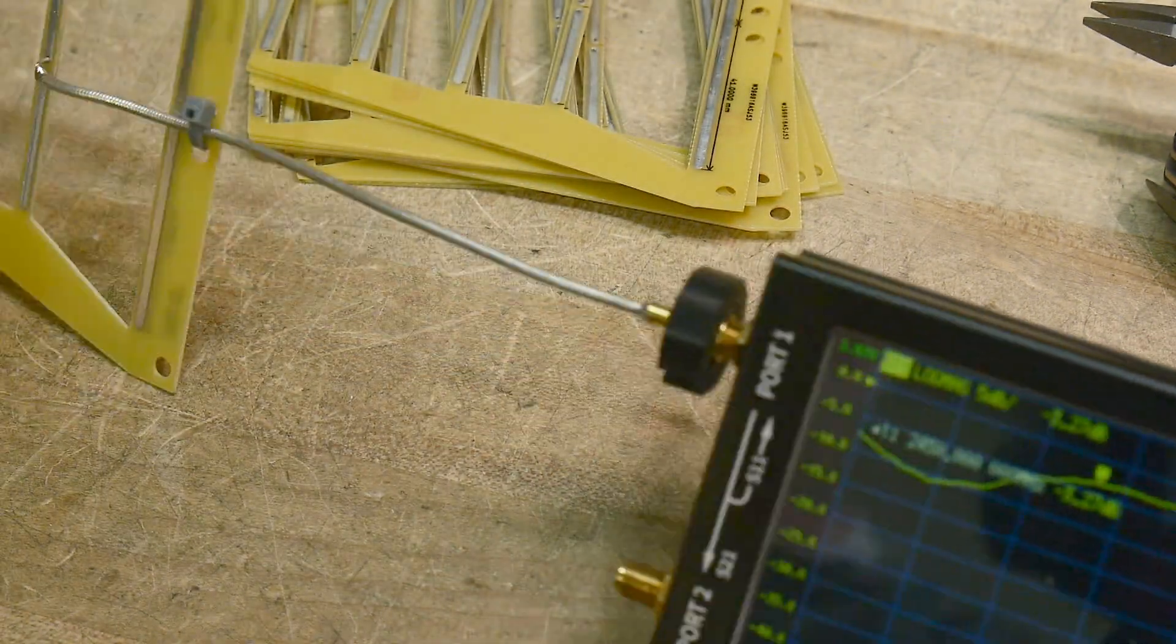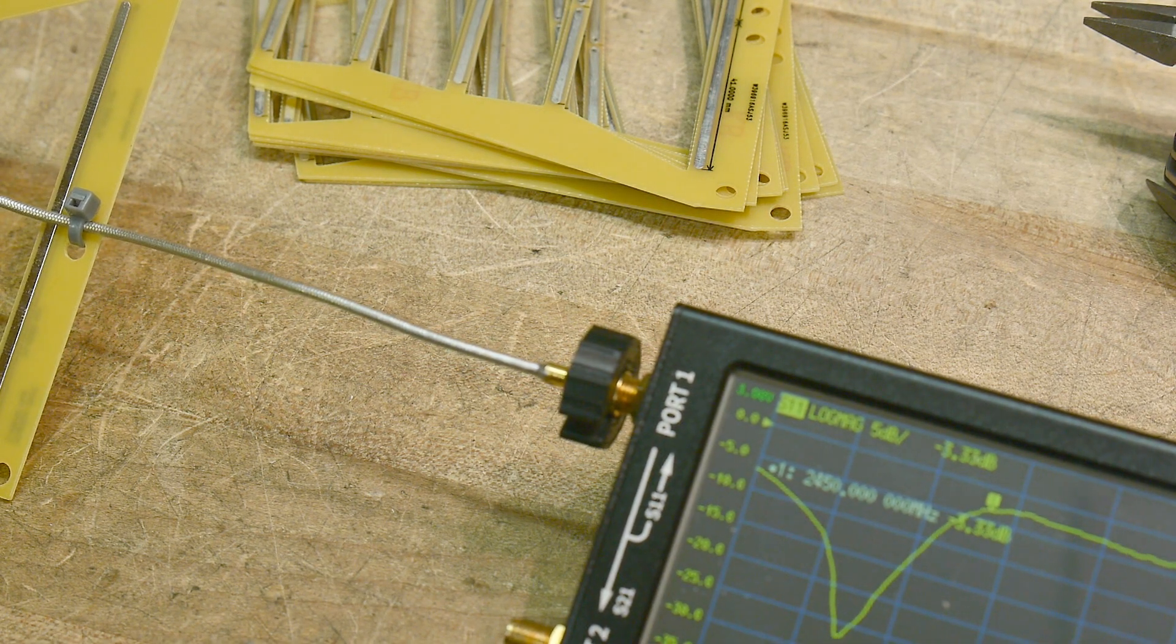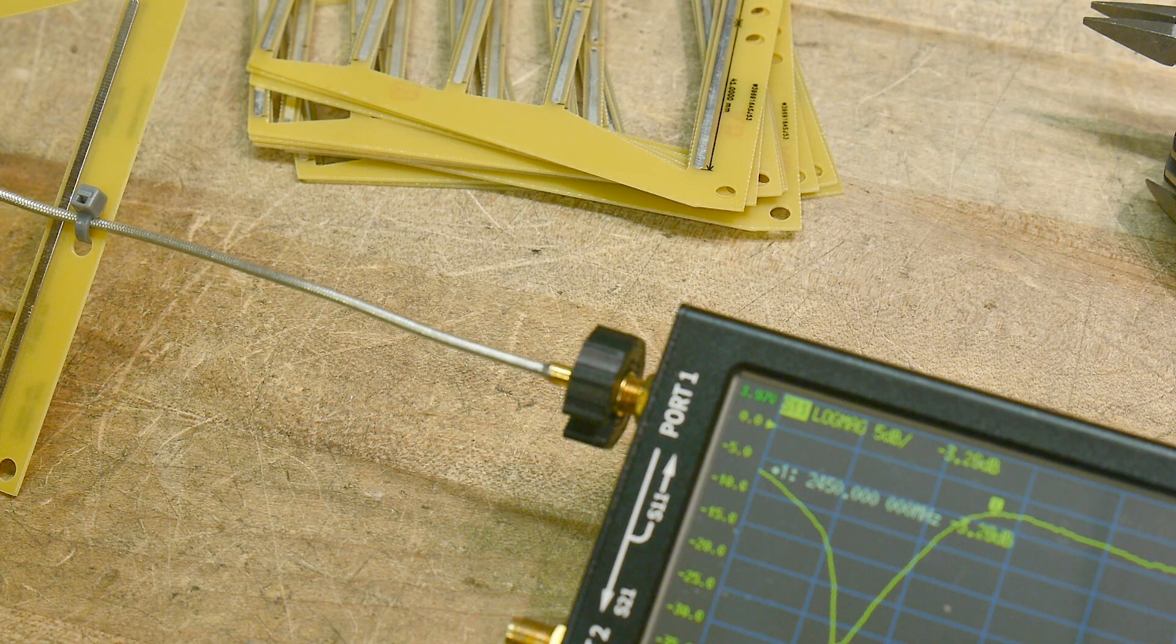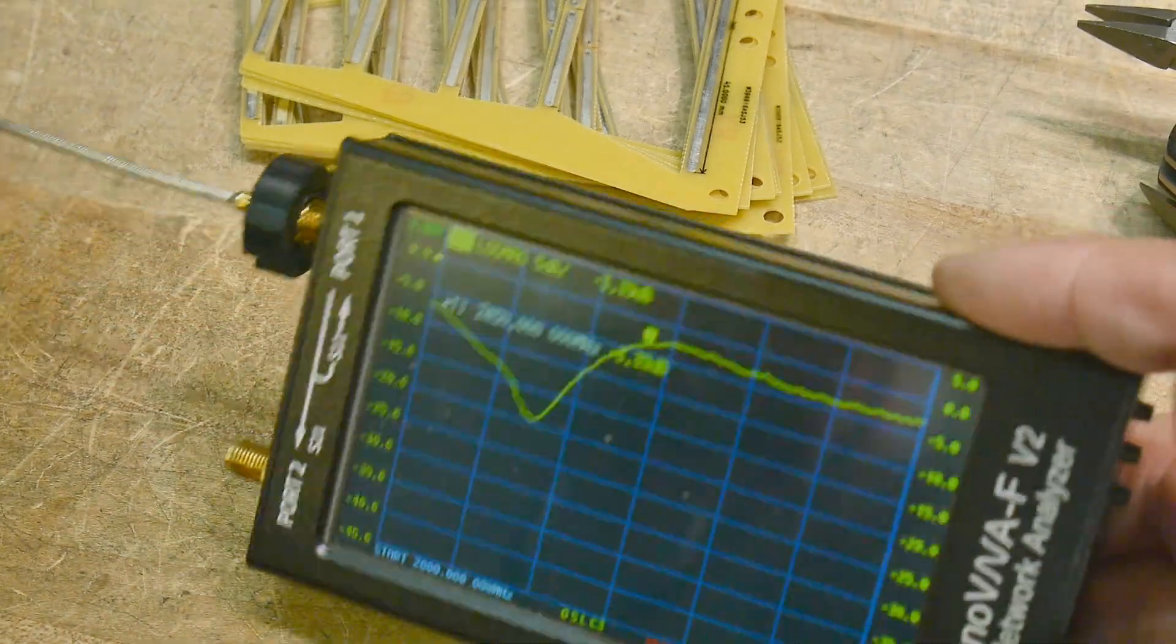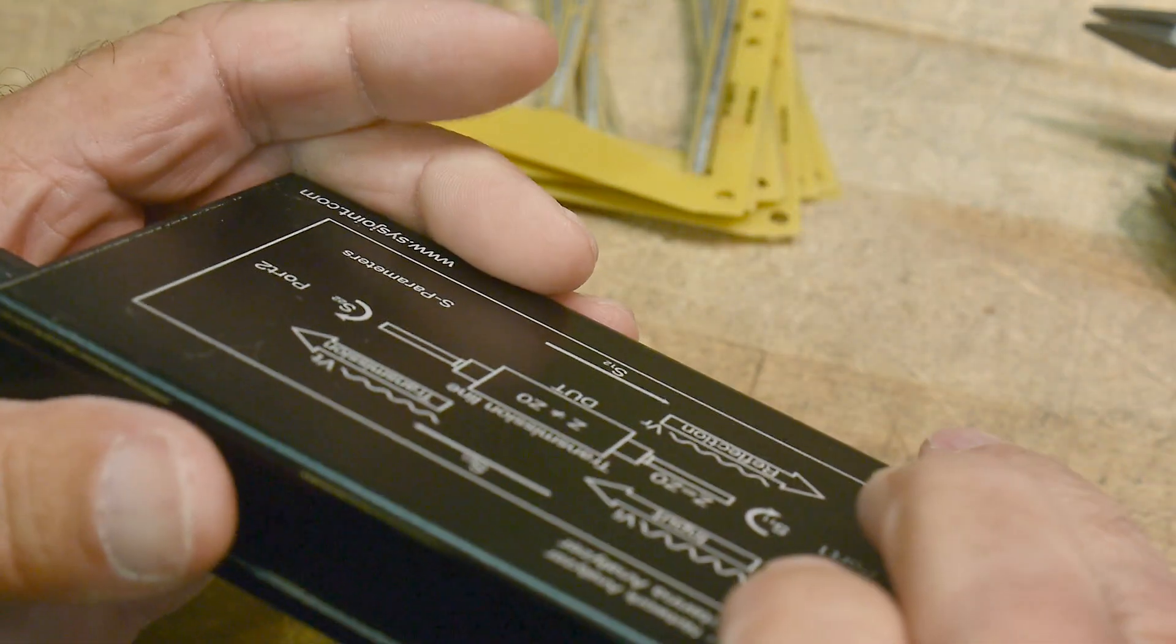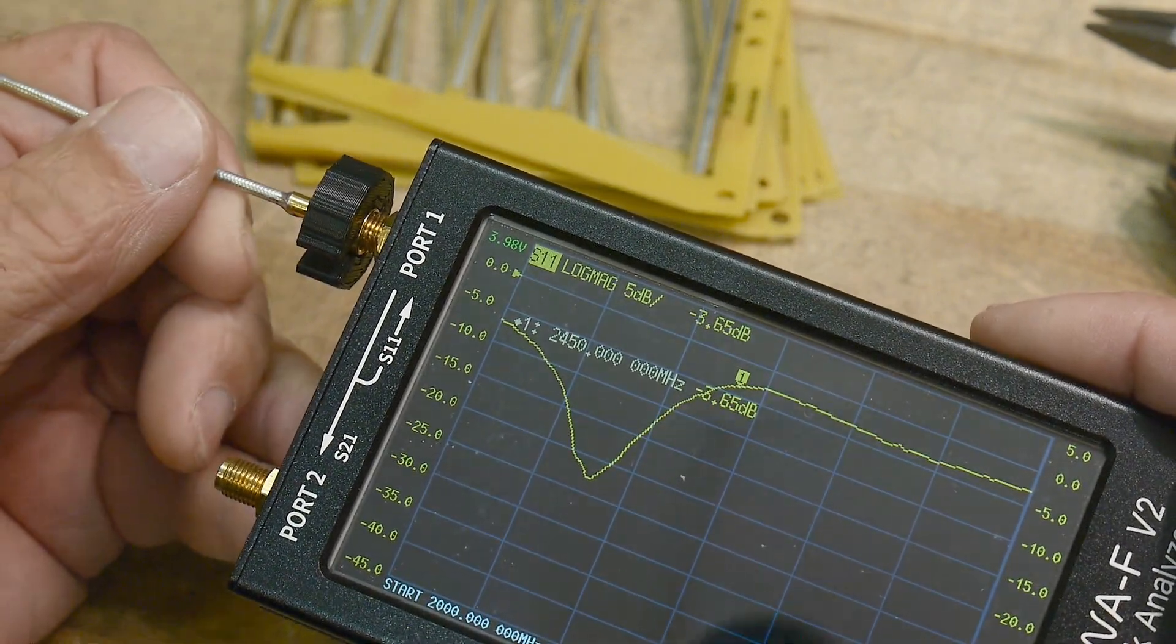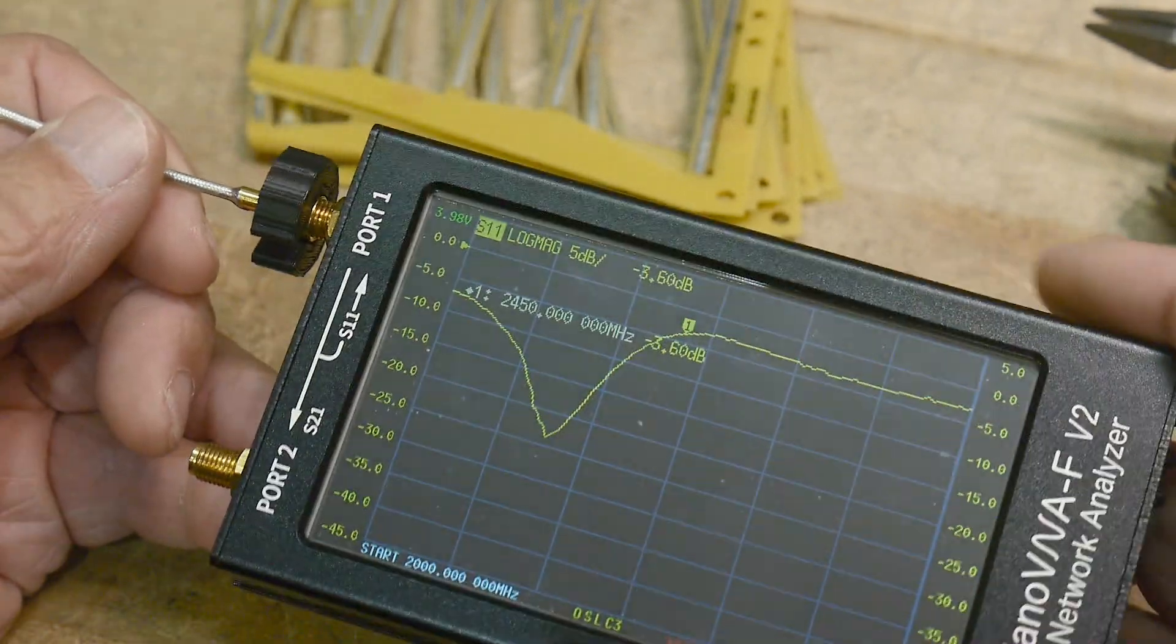All right. Well, I guess we'll just maybe try its directivity in some manner, see if it actually has directionality or not. Look at that. Almost minus 30 sitting on the bench here. Yeah, very nice. So I think we can just kind of point it at something and move it around and see if it is stronger in one direction or the other. So we'll give that a try.